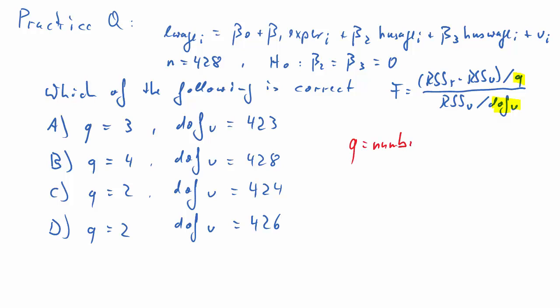Here's the solution. As far as the number of restrictions is concerned, the only way to get that is to go to the null hypothesis. Here, in our null hypothesis, we are restricting beta 2 and beta 3 to 0, so we have two restrictions, meaning solutions A and B are wrong.